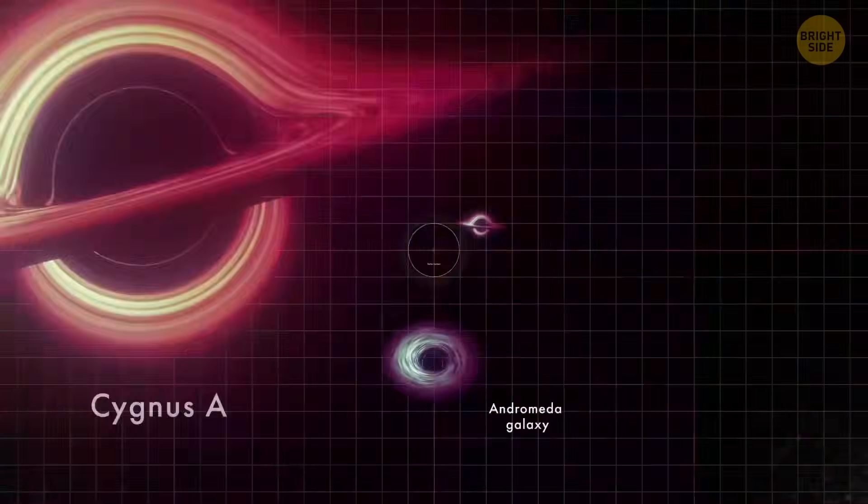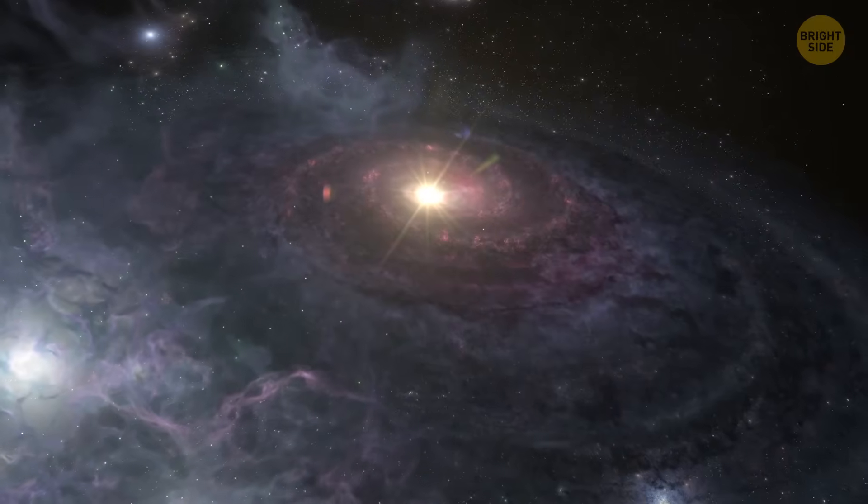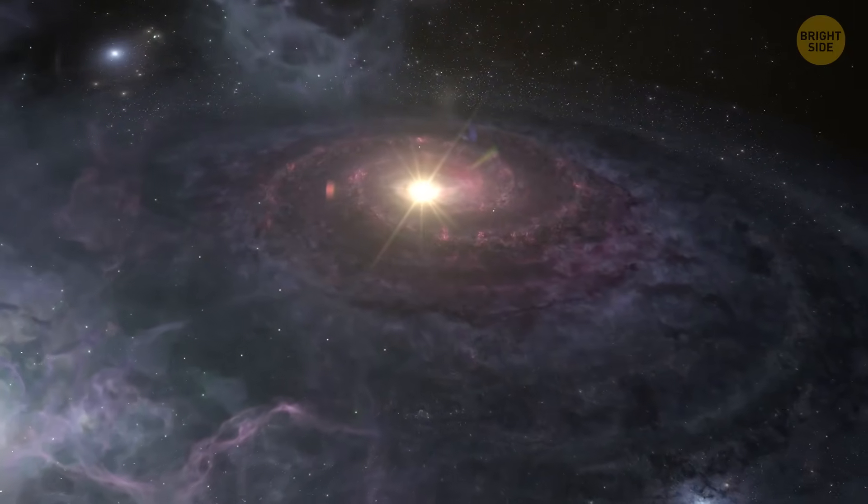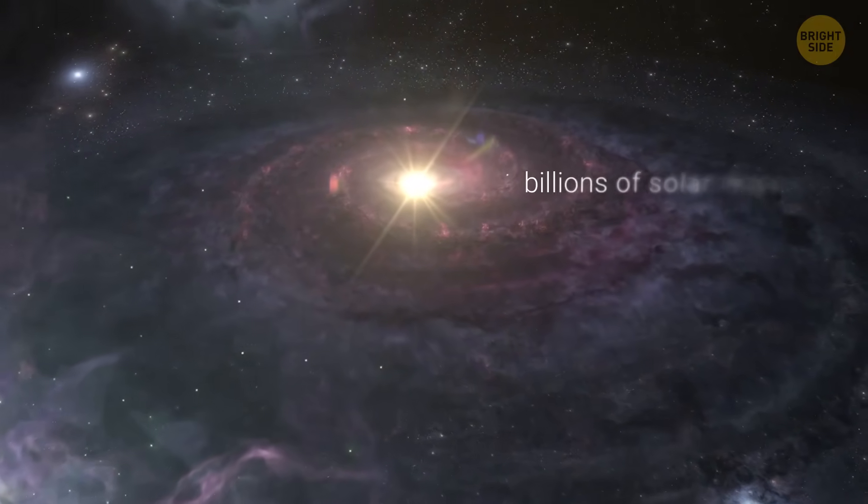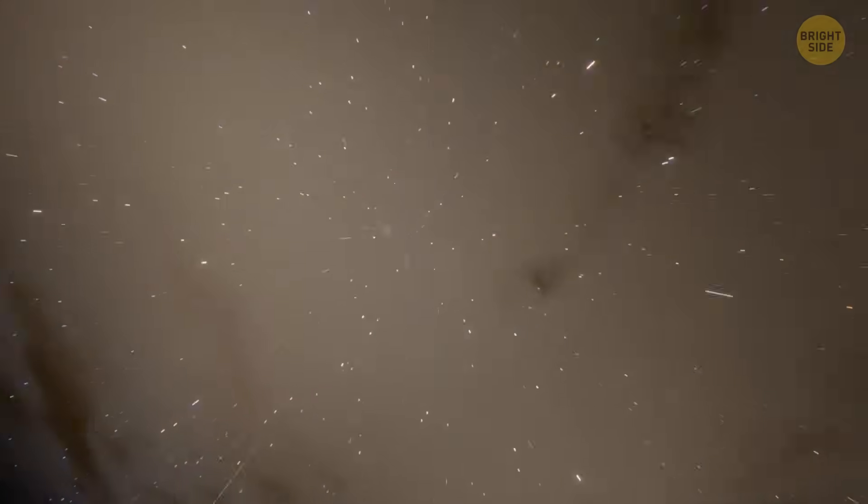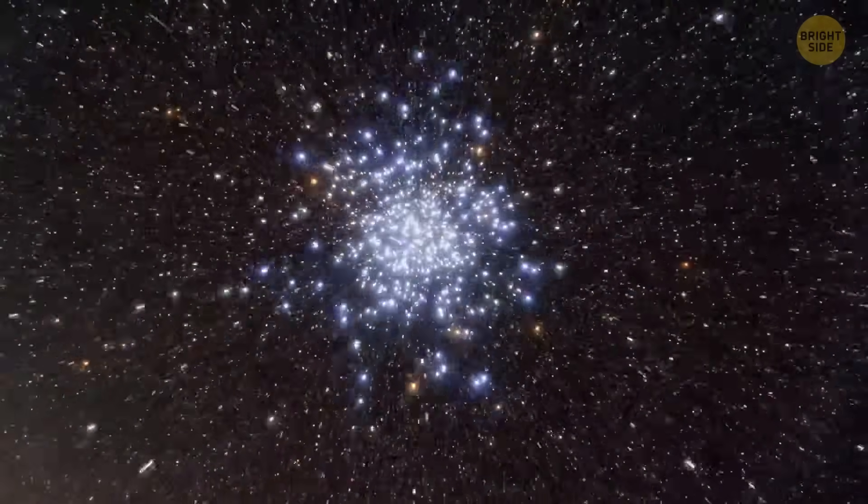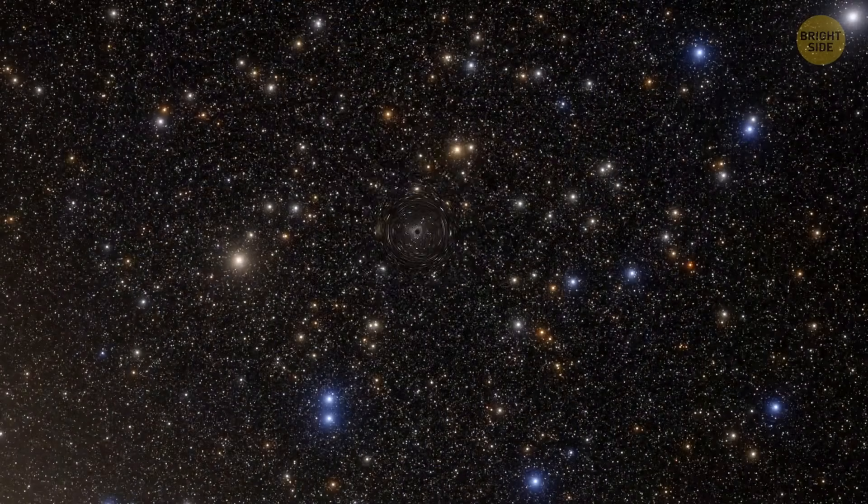Next, there are supermassive black holes. These are behemoths, chilling in the center of galaxies, millions to billions of solar masses. Almost every big galaxy out there, including our own Milky Way, has a supermassive black hole.